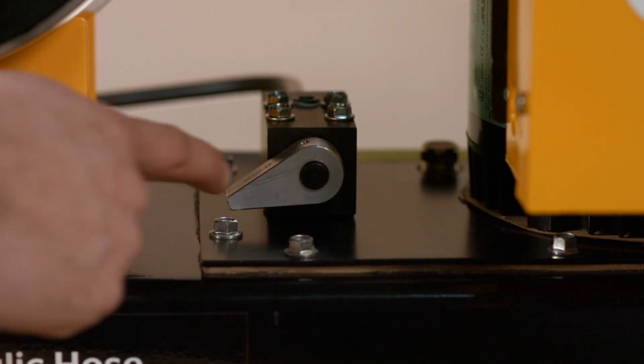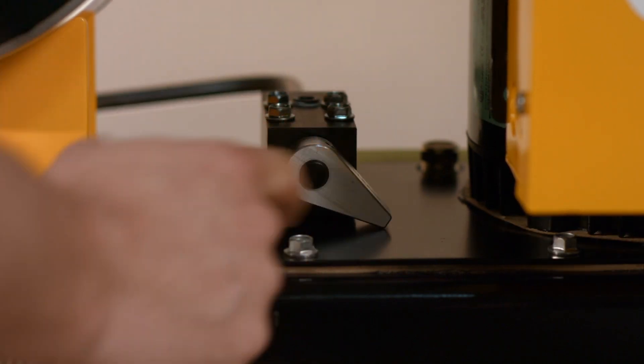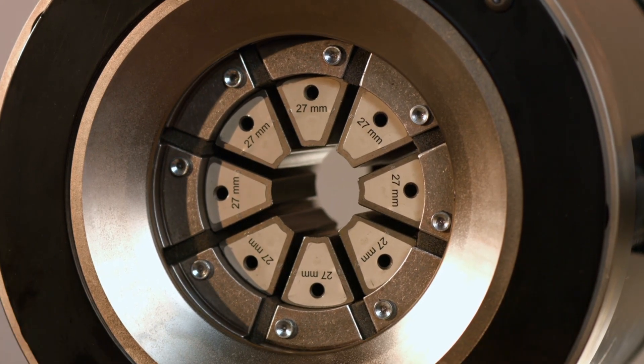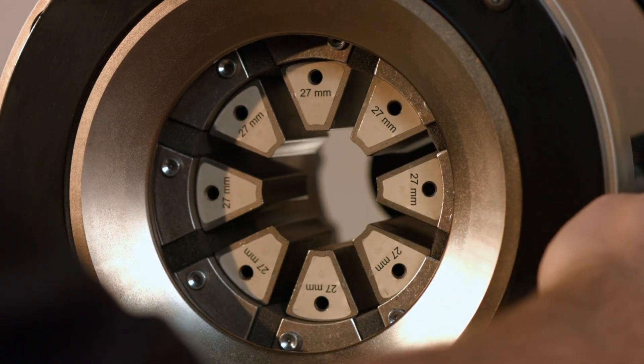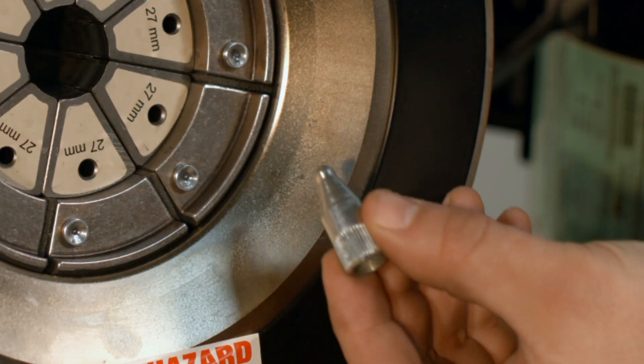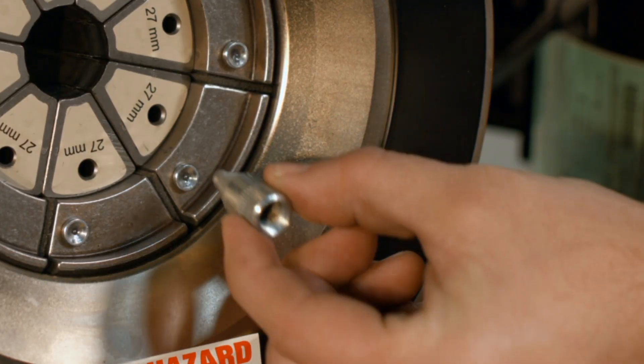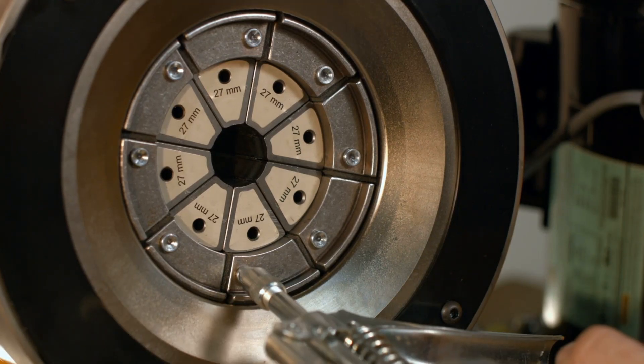Then move the hold release lever to the release position. This will cause the master die to return to the fully open position. Lubricate the master die using the provided moly disulfide grease and a flush type grease coupling.